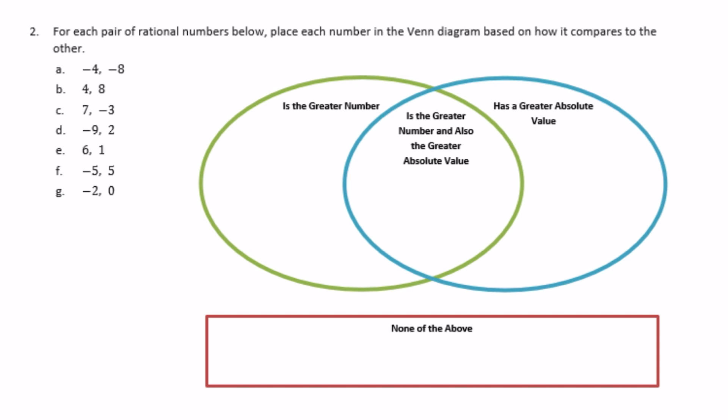Number 2: for each pair of rational numbers below, place each number in the Venn diagram based on how it compares to the other. Part A: negative 4 and negative 8. Which is the greater number — negative 4 or negative 8? Negative 4 is greater than negative 8. But which one has a greater absolute value? The absolute value of negative 4 is 4, the absolute value of negative 8 is 8, so negative 8 has the greater absolute value.